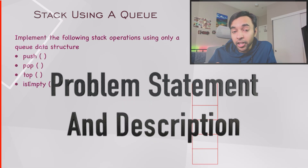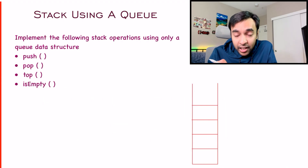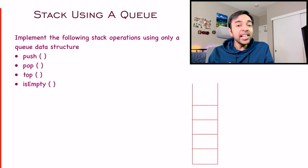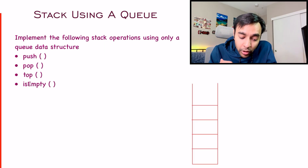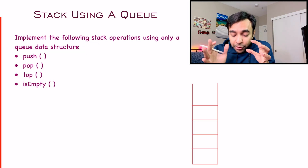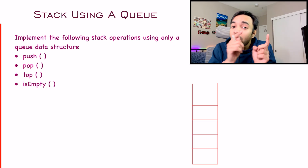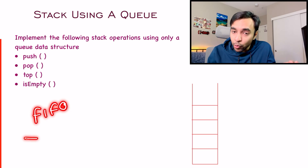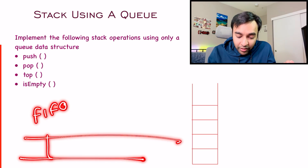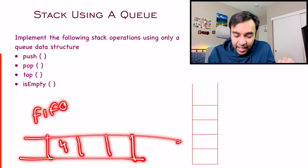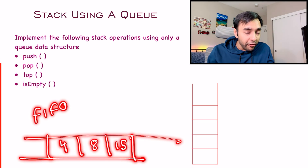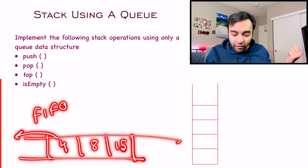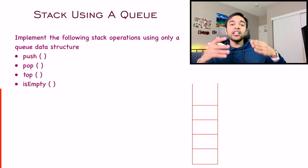The problem itself is very straightforward. You have to implement all of the operations that you would do on a stack data structure, but the only catch is that you have to do this using only queue data structures. This is tricky because a queue works on the policy of first in first out. If you have a queue and elements 4, 8, and 15 come in, then 4 came in first so it will be the first element to get out, and 15 will get out last.